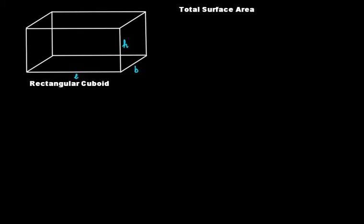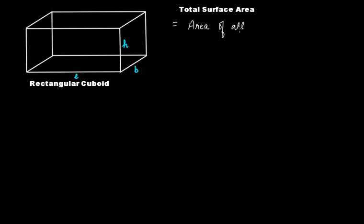Now, the total surface area. In the case of a rectangular cuboid, this is the length, this is the breadth, and this is the height. The total surface area means the area of all the faces — the area of the base, the area of the top surface, the right side face, left side face, front face, and the back face. So we have six faces, meaning the area of all the six faces.